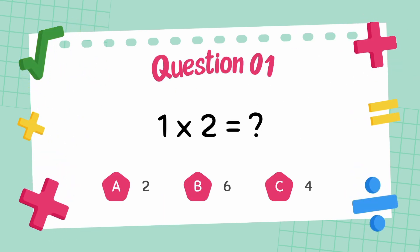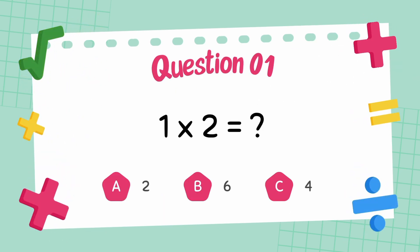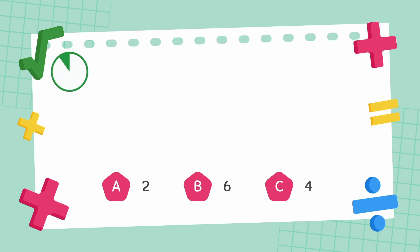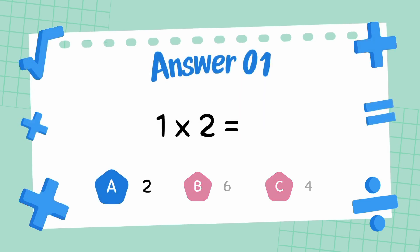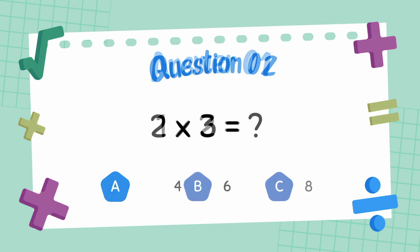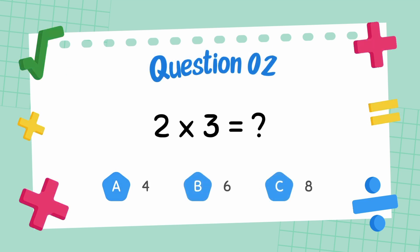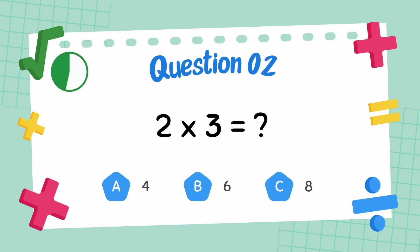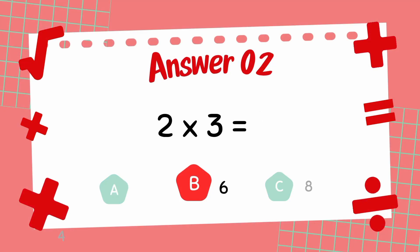What is 1 multiply 2? The answer is 2. What is 2 multiply 3? The answer is 6.